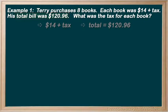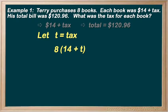So for step 2, let's say our variable is t, the tax. We'll only have one variable to worry about. And on to step 3, translate and solve. So we have 8 books, and each one costs him $14 plus tax. The total cost of everything was $120.96.